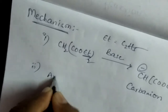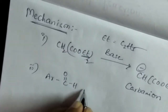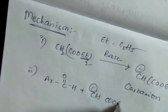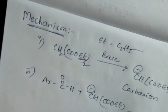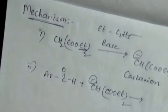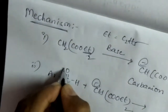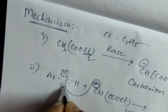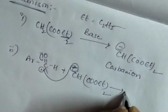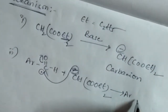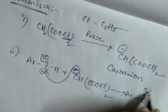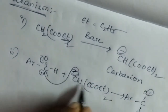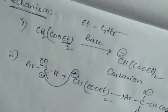The second step is: this carbanion reacts with benzaldehyde. The carbanion reacts with the C=O group of benzaldehyde — the C=O is shifted to oxygen, the carbon gets a positive charge, and this negative carbon atom is reacted to the positively charged carbon atom. So the reaction gives C-O⁻ and H, and the remaining CH-COOC₂H₅.